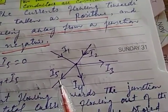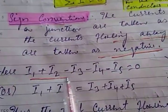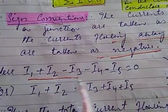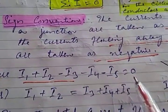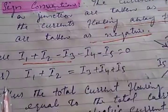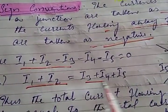i4 and i5 are also flowing out of the junction. Applying Kirchhoff's first rule: i1 + i2 − i3 − i4 − i5 = 0, which implies that i1 + i2 = i3 + i4 + i5.